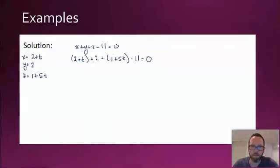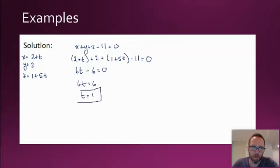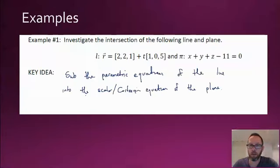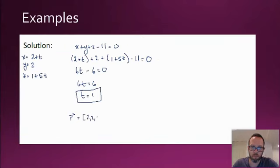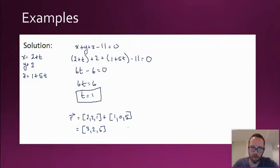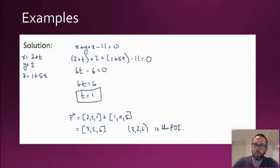So we have T plus five T, that's six T. And two plus two plus one is five, minus 11 gives negative six. So six T minus six equals zero, meaning six T equals six, so T equals one. That parameter T equals one corresponds to a point of intersection. Substituting T equals one back in: R equals (2,2,1) plus one times (1,0,5), giving us the point (3, 2, 6). That is the point of intersection between this line and this plane.